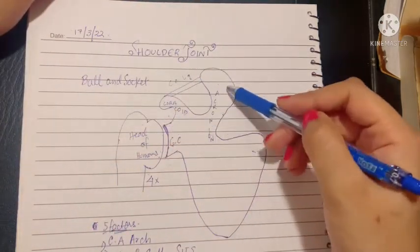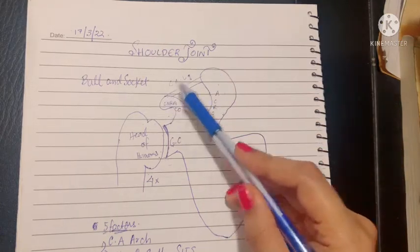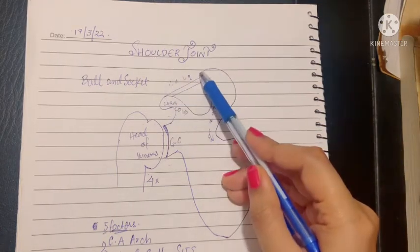But for sake of understanding and drawing, I had to draw them being away from each other. There is a ligament that runs from coracoid to acromion called the coracoacromial ligament.